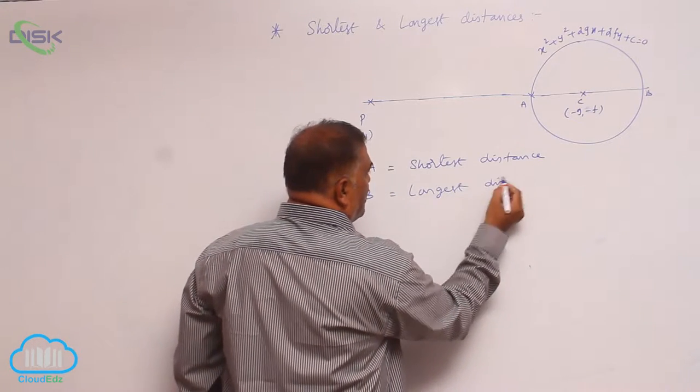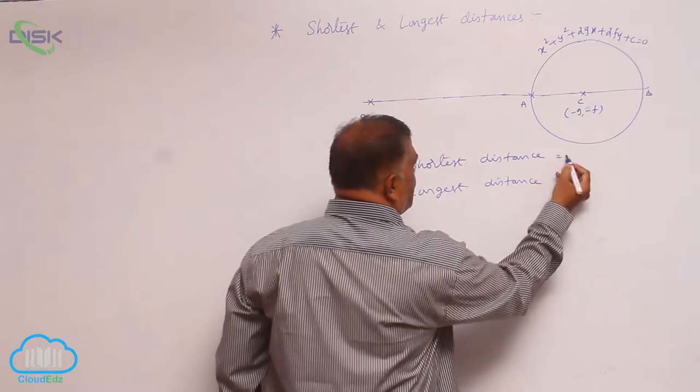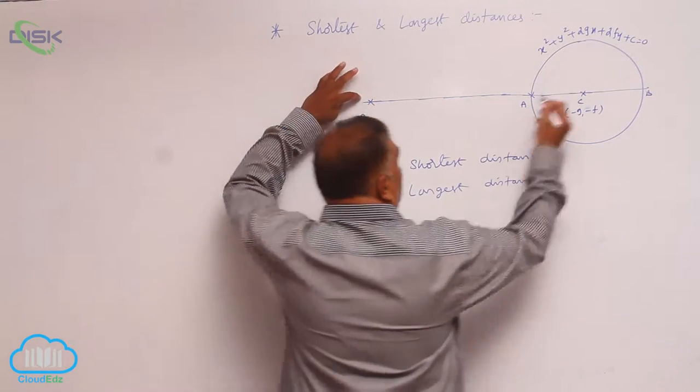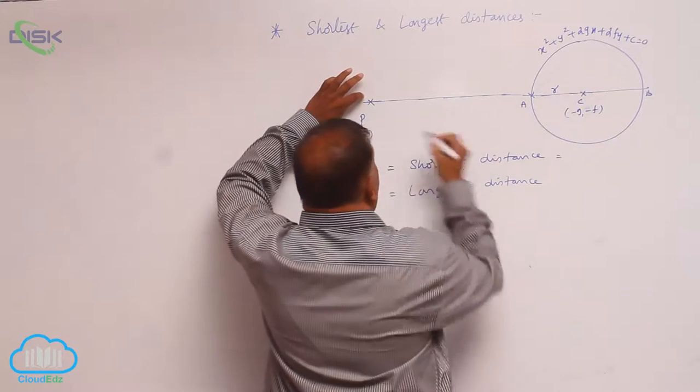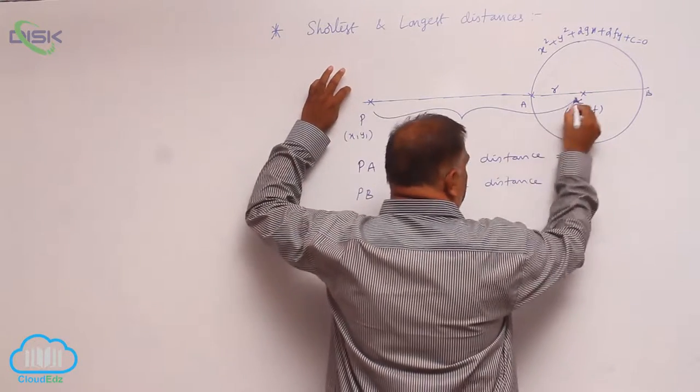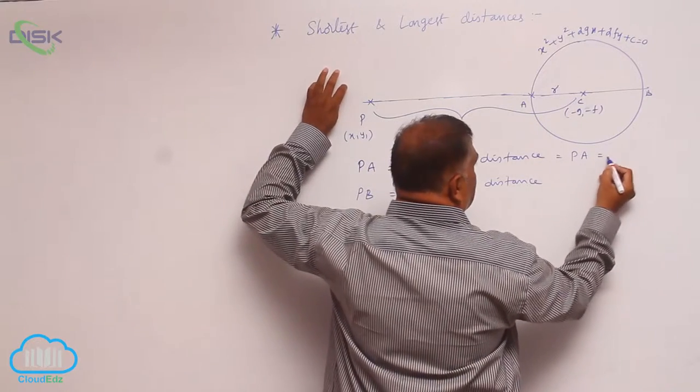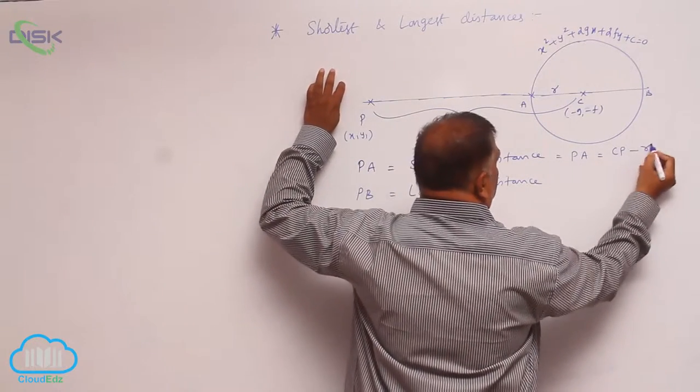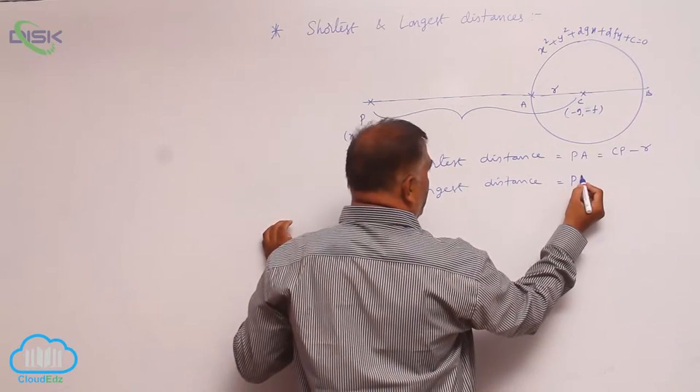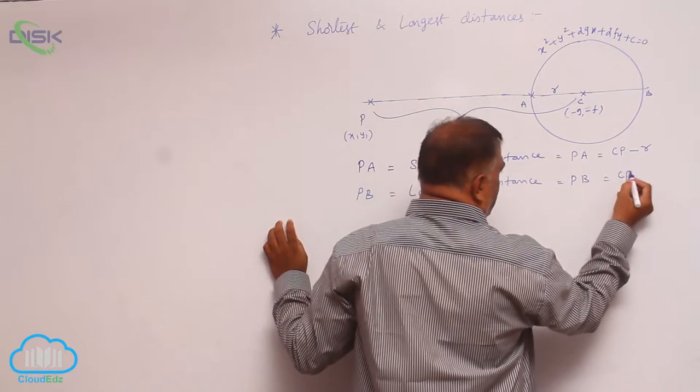Now observe very clearly this is shortest distance, PA. We know that this is r and this is CP. So PA is CP minus r, whereas PB is equal to CP plus r.